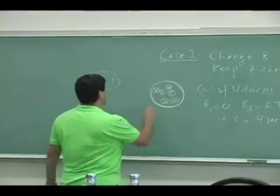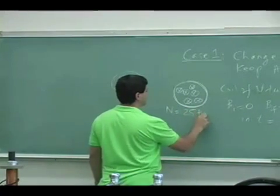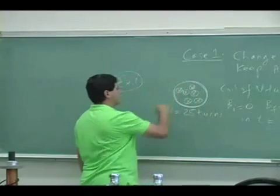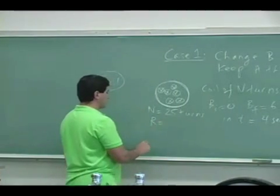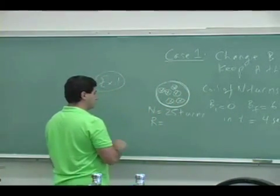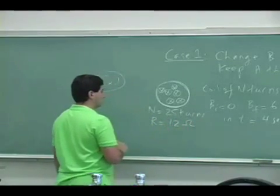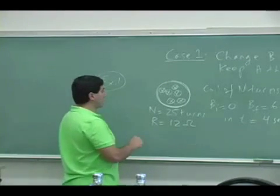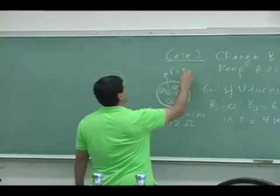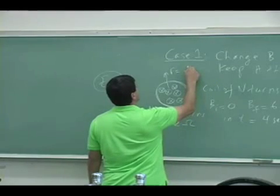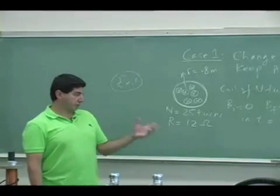So let's say this thing has n equals, let's say, 25 turns. So 25 turns like that. And I could give it some resistance. Let's say the resistance of all the turns combined is, let's say, 12 ohms. And finally, I can give it some radius. I can say the radius equals, let's make it 0.8 meters. And now based on this, I can ask a bunch of questions.